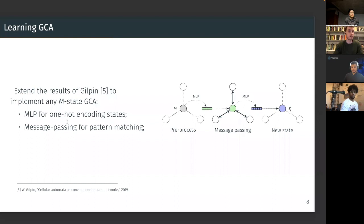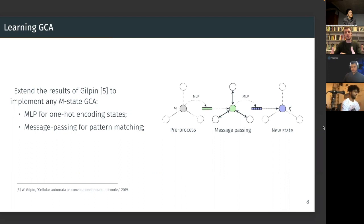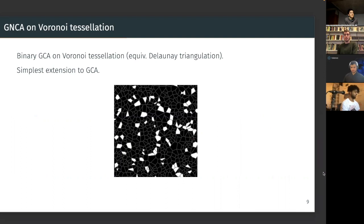By setting the weights smartly, you can implement the two operations needed: one-hot encoding, done by the multilayer perceptron, and then pattern matching, which you can do using the states and the edge attributes as sort of keys. You have as many channels as you need to implement every possible combination of inputs, and you can map the matching combinations to the next state you want. However, this is useful in a sense, but also not very useful because it doesn't scale well and doesn't tell you much about what this model can do in practice. We want to learn the rule, not set the weights manually.